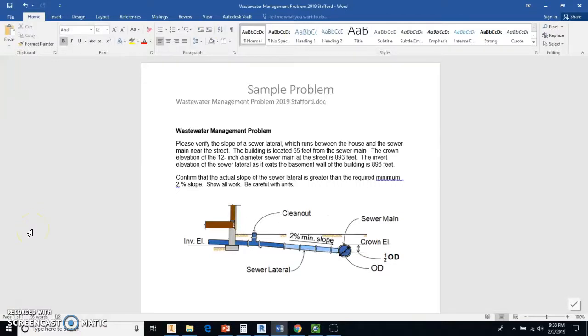Okay, let's do this problem. This is in your packet and it says please verify the slope of a sewer lateral which runs between the house and the sewer main near the street. The building is located 65 feet from the sewer main.